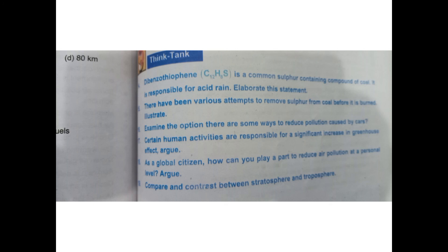If there is incomplete burning, we can produce carbon monoxide. We can use plants so that they can absorb the gases and release oxygen, which helps reduce carbon dioxide in the atmosphere.